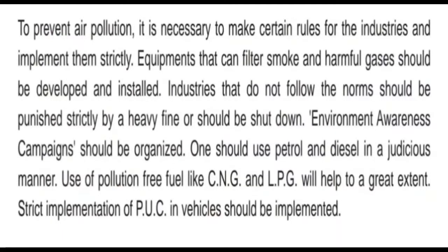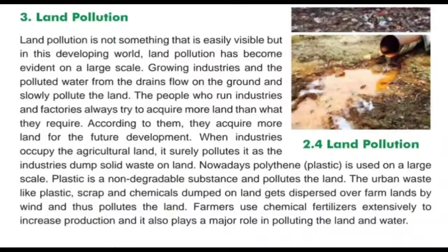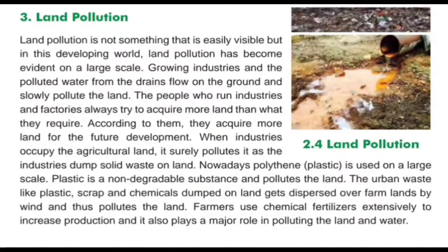Now let us see the third pollution, that is land pollution. Land pollution is not something that is easily visible, but in this developing world, land pollution has become evident on a large scale. Growing industries and polluted water from drains flow on the ground and slowly pollute the land. The people who run industries and factories always try to acquire more land than what they require — according to them, for future development.